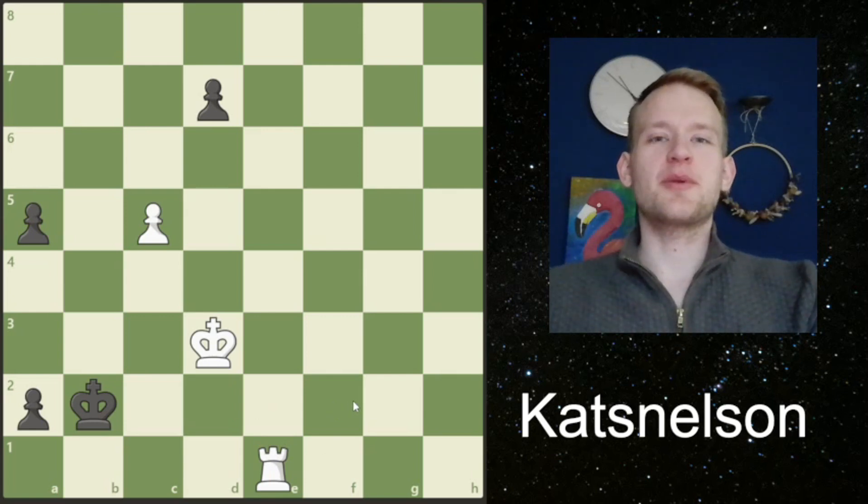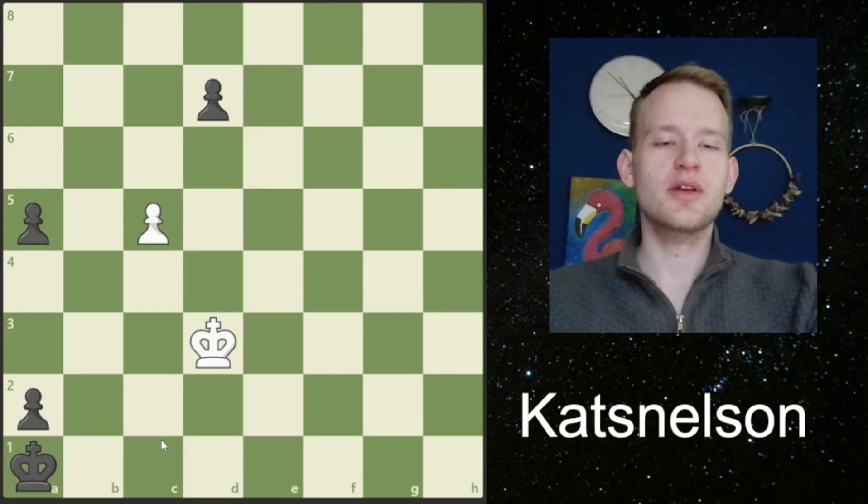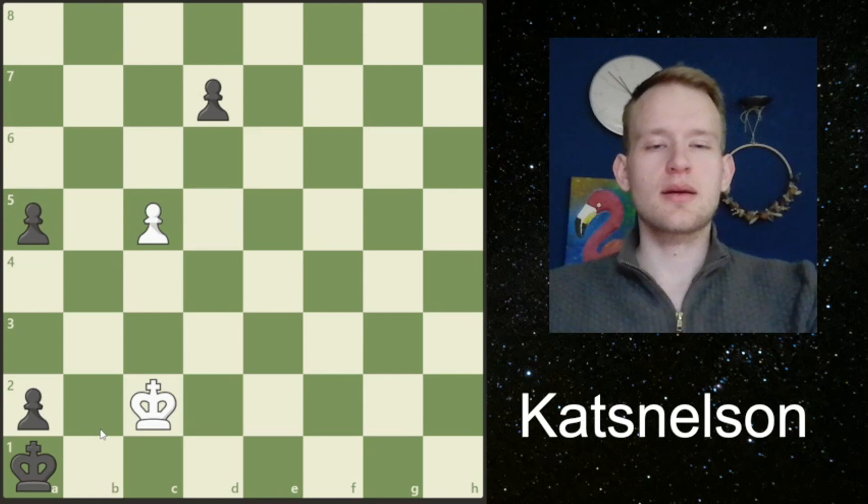Maybe here is a good moment to pause the video again and try to find the next move for white. It's a fantastic move: rook to a1. We're kind of baiting the black king to take the rook, and then we're going to trap the king in the corner.